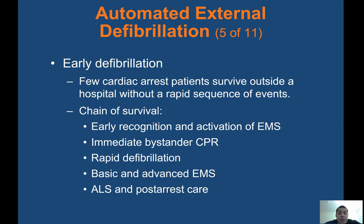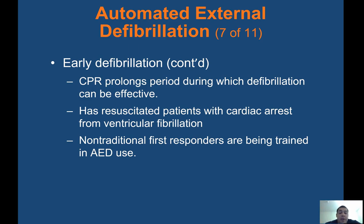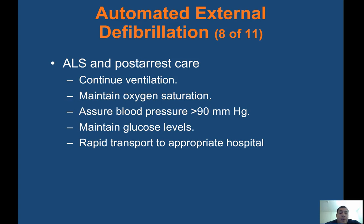Early defibrillation: few cardiac arrest patients survive outside a hospital without a rapid sequence of events. The chain of survival has five links: early recognition, activation of EMS, immediate bystander CPR, rapid defibrillation, basic and advanced EMS or ALS, and post-arrest care. If any link is delayed, it could seriously harm your patient. CPR prolongs the period during which defibrillation can be effective. ALS and post-arrest care includes continuing ventilation, maintaining oxygen saturation, keeping blood pressure above 90, maintaining glucose levels, and rapid transport to the appropriate hospital.